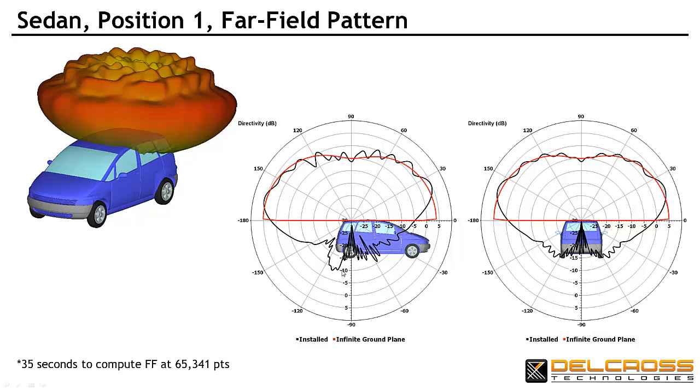As you can see from the center graphic, coverage is good to the rear of the car, but suffers in the direction of the front of the car. This simulation required only 35 seconds for Savant to deliver 3D far-field information at over 65,000 observation points on a standard laptop computer with a standard graphics card.